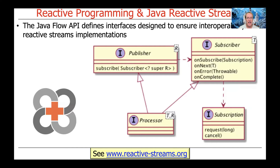The way this is achieved in Java 9 and beyond is through the Java Flow API. Surprisingly, there are really only four interfaces that are part of the Flow API, as shown in this diagram. They're pretty simple. We've got Publisher, which has a subscribe method where a subscriber can attach itself to the publisher to indicate that it wants to receive notifications.